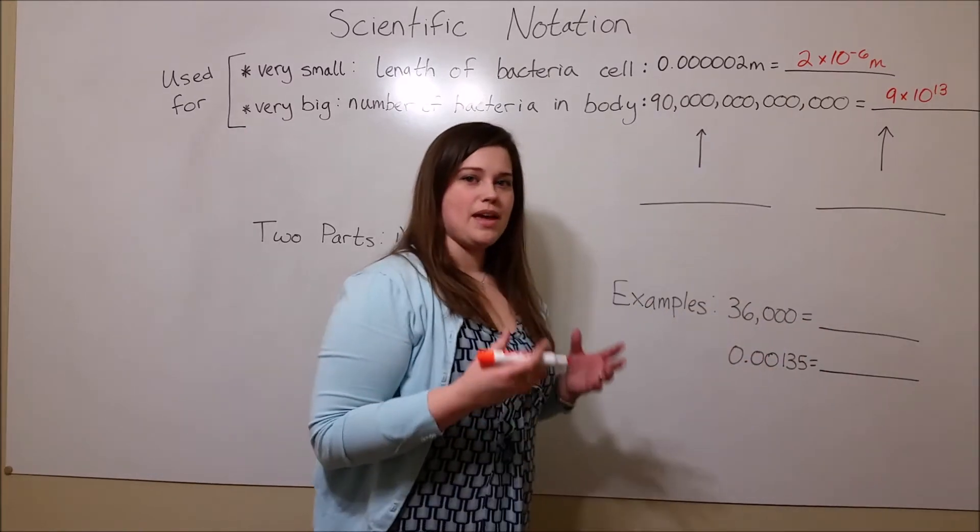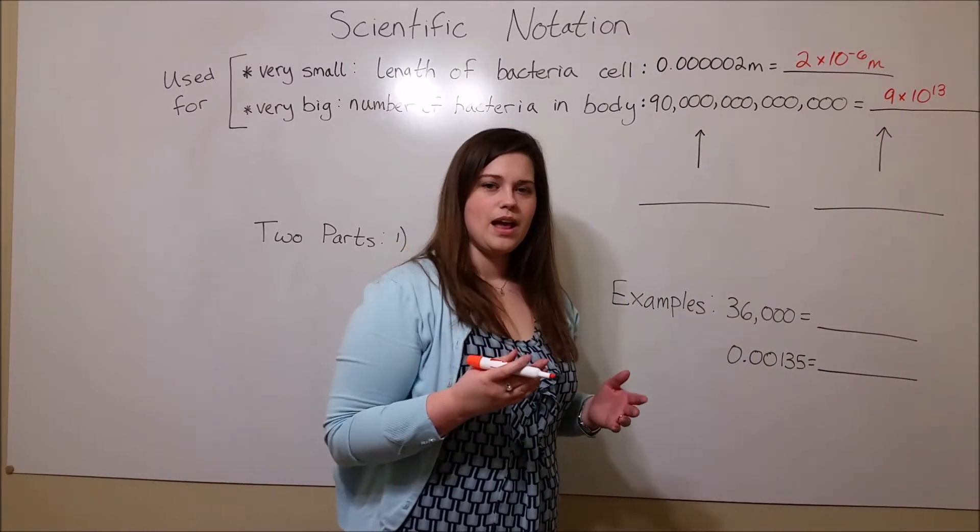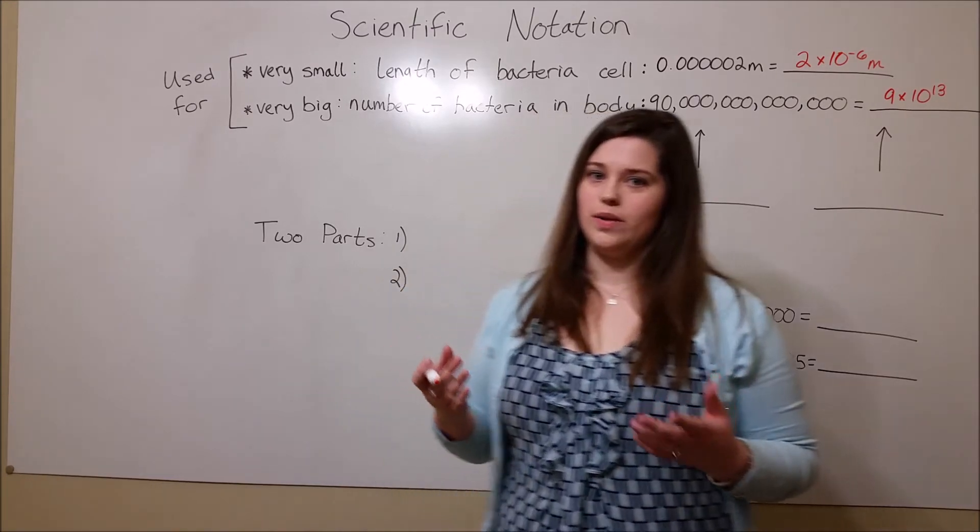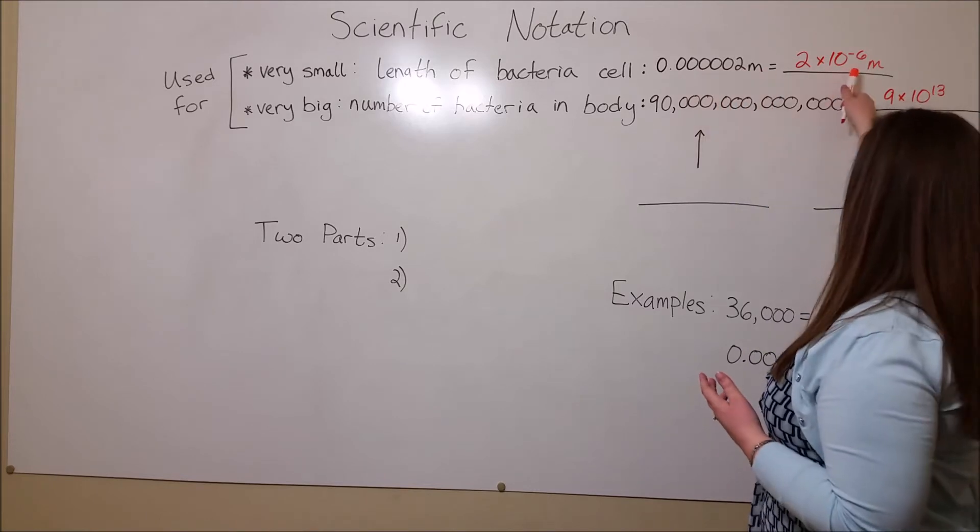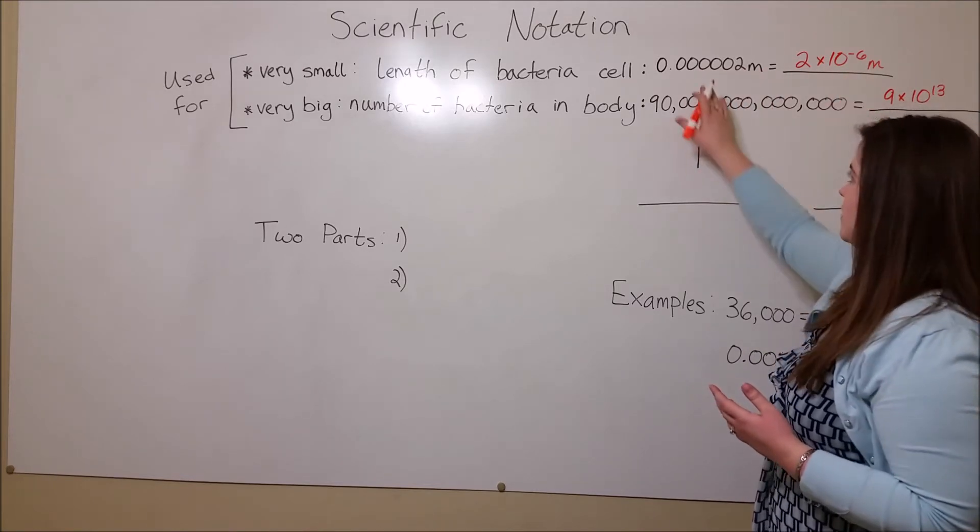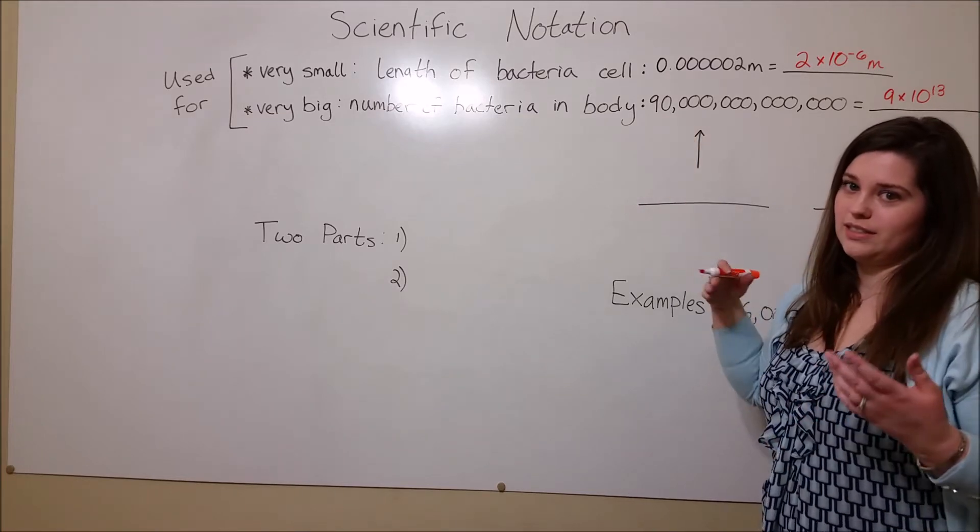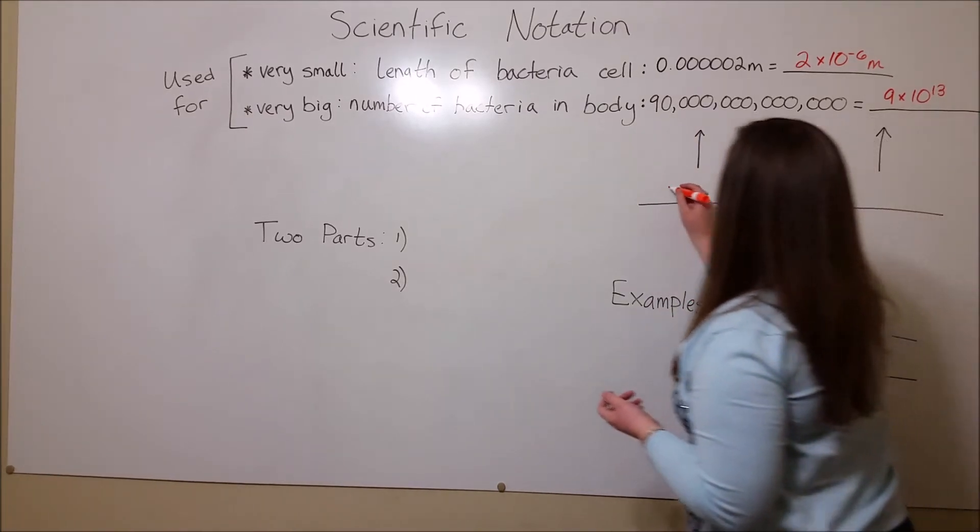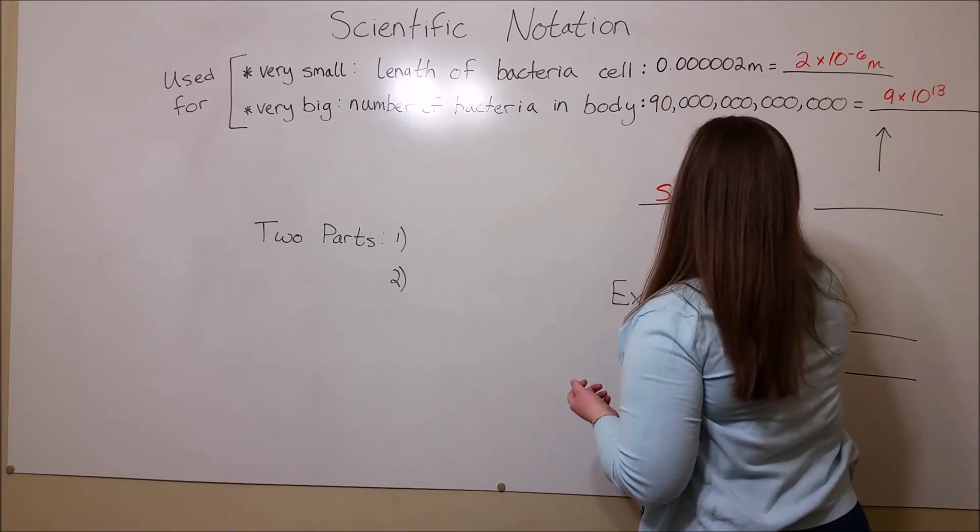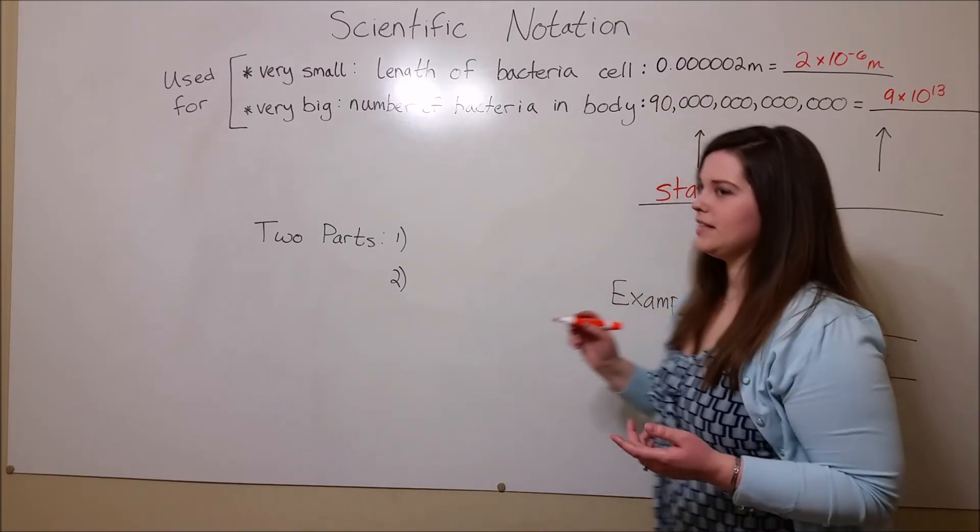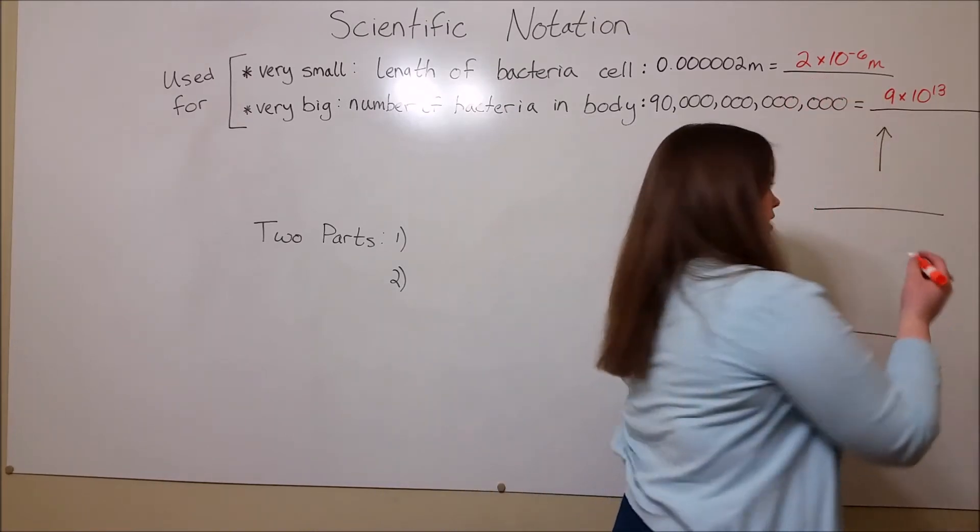And you can see that makes these extreme numbers more manageable. Now let's talk about how you get from this type of number to this type of number. The type of number like this that is not in scientific notation is called standard notation. And it is distinguished from this type of number, scientific notation,